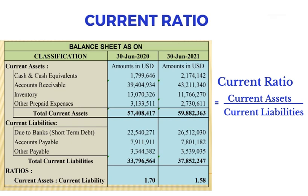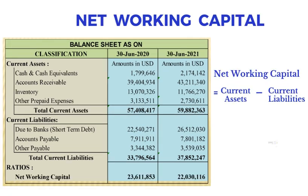A current ratio of two is most acceptable, but it varies depending on the industry. Net working capital is not a ratio but measures the overall liquidity position of the company. It is calculated by deducting current liabilities from current assets.